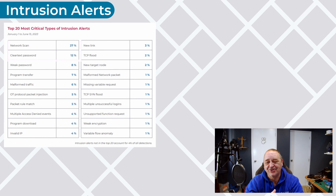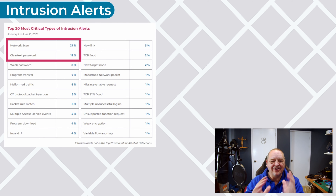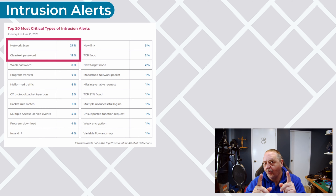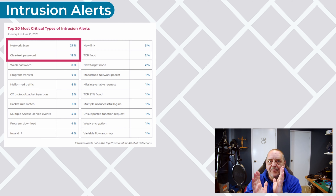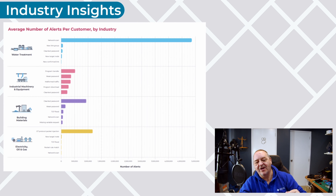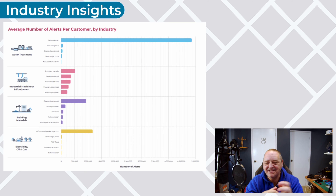Looking at intrusion alerts: network scanning and clear text passwords — no surprises there. These are the most common things I see when I'm in calls with customers helping them understand their environments. Network scans should be fairly easy to solve, but in some OT environments, getting rid of devices with clear text passwords can be a real challenge — so that could stick around for a while. As an industry insight, network scans in water treatment environments is an eye-opener — is this indicative of a need to change behaviors within that environment?